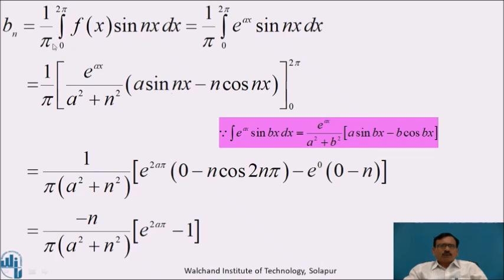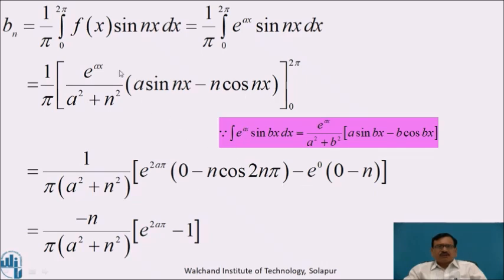Now similarly, bₙ = (1/π) ∫₀^(2π) f(x) sin nx dx = (1/π) ∫₀^(2π) e^(ax) sin nx dx. Using ∫e^(ax) sin bx dx = e^(ax)/(a²+b²) · (a sin bx − b cos bx), we evaluate from 0 to 2π. Putting in the limits: sin 2nπ = 0, cos 2nπ = 1, and at the lower limit sin 0 = 0, cos 0 = 1, giving −n.